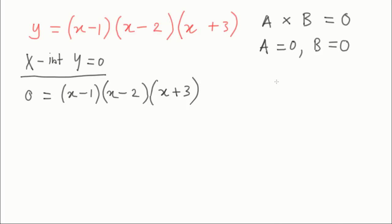It doesn't matter how many things you have multiplied together. If the product of those things is zero, then we can just pick out each of those things one at a time like this and go x minus 1 equals zero, or x minus 2 is zero, or x plus 3 is zero.